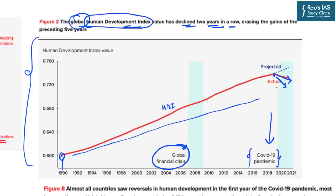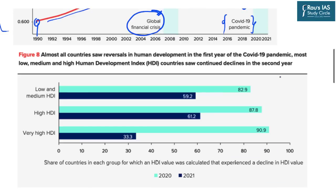This decline is not restricted only to developing countries or LDCs. Almost all countries have seen reversals in human development in the first year of the COVID-19 pandemic — whether very high HDI countries, high HDI countries, or low and medium HDI countries, which obviously faced the maximum brunt.